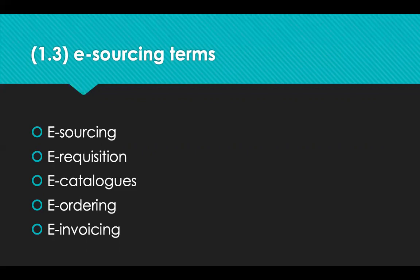E-catalogues are a database of goods and services that a supplier provides, used by the buyer to identify the exact product or service required. They will indicate bulk discounts where appropriate. E-ordering is the process of sending a purchase order to a supplier electronically — by email or through an e-procurement system — and can be carried out automatically by stock replenishment systems, which automatically place an order when stock reaches a certain level. E-invoicing is the process of issuing invoices electronically, either by email or through an e-procurement system. The invoice is a request from a supplier for payment for goods or services provided.